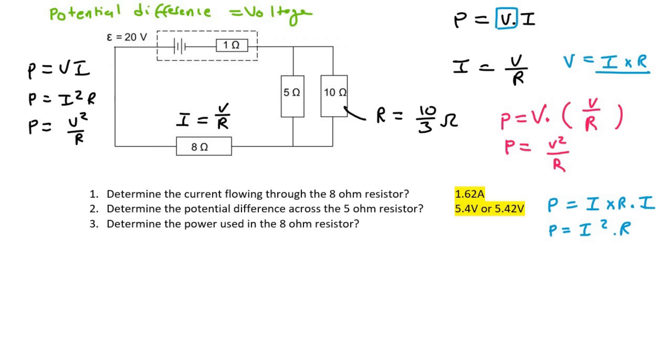So it's actually just one formula, but we're using I equals V over R and V equals IR as like a substitution, and then we get the other two formulas. Right, so you can use whichever one you like, depending on the availability or whatever you have. So for number three, it says determine the power used in the 8 ohm resistor. Well, we know the current there. That was 1.62 amps, and we know the resistance. So I'm just going to use this one.